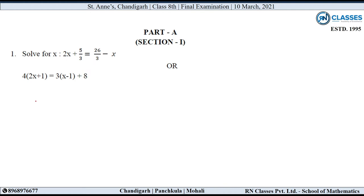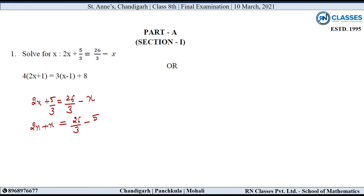Solve for x. The equation is: 2x plus 5 upon 3 is equal to 26 upon 3 minus x. We will find out the value of x. First, we will move the x terms to the left-hand side. 2x as it is, minus x transposed, so plus x. Constants go to the right-hand side: 26 by 3 minus 5 by 3.